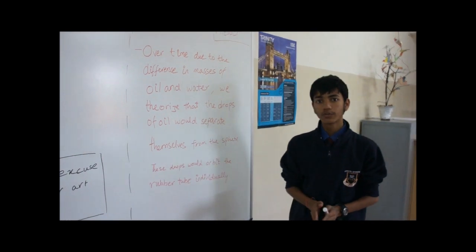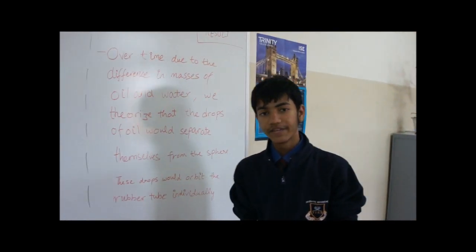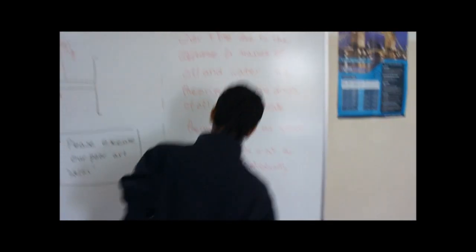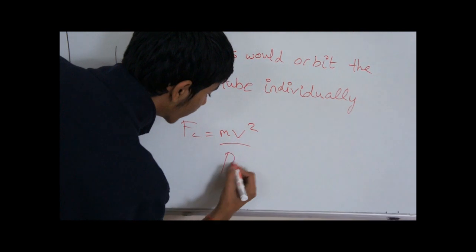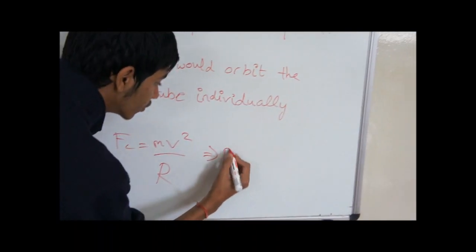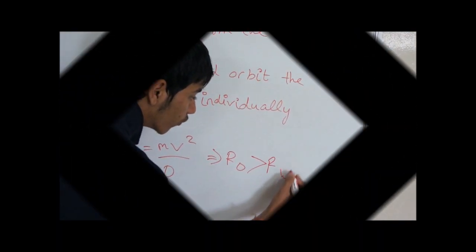We theorize that over time, the drops of oil will separate themselves from the sphere, and then these drops should revolve around the rubber tube individually. This can be derived from the equation: centripetal force equals mass times velocity squared upon the radius. From this can be derived that the radius of the orbital path of the oil will be greater than the radius of the orbital path of the water.